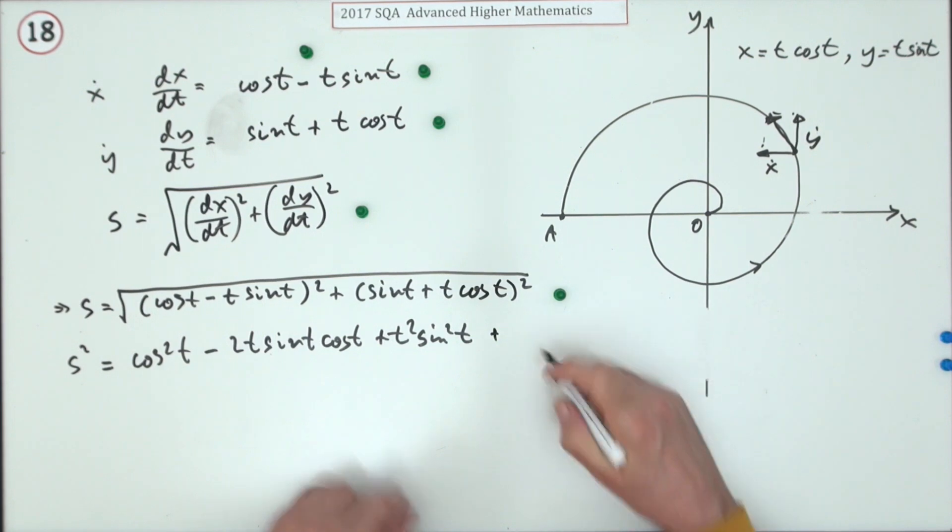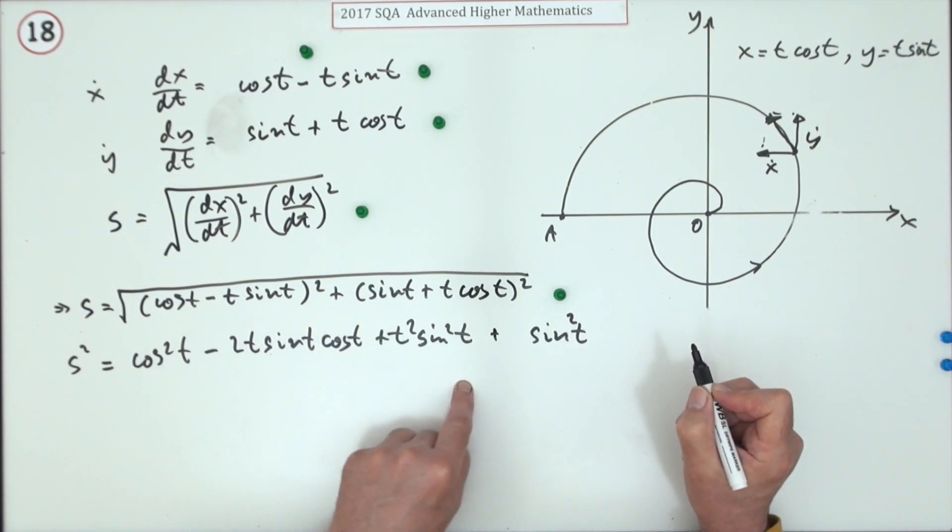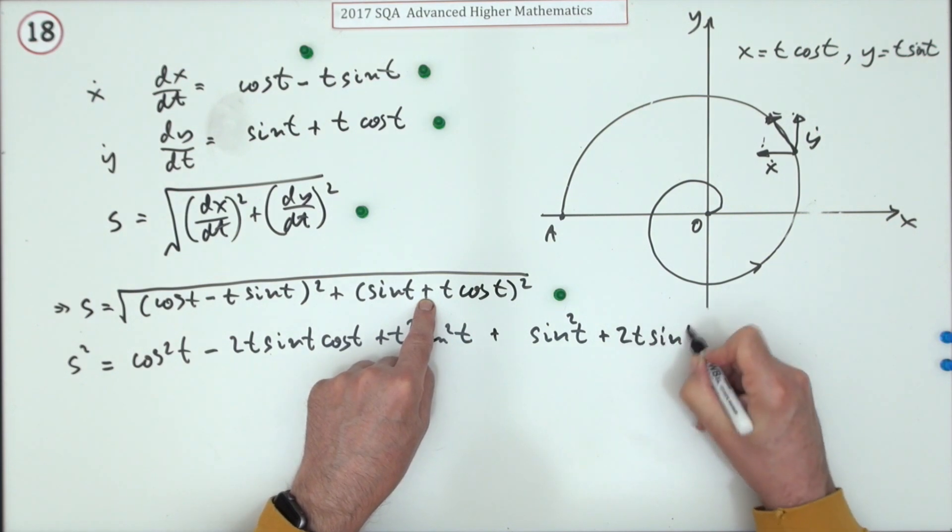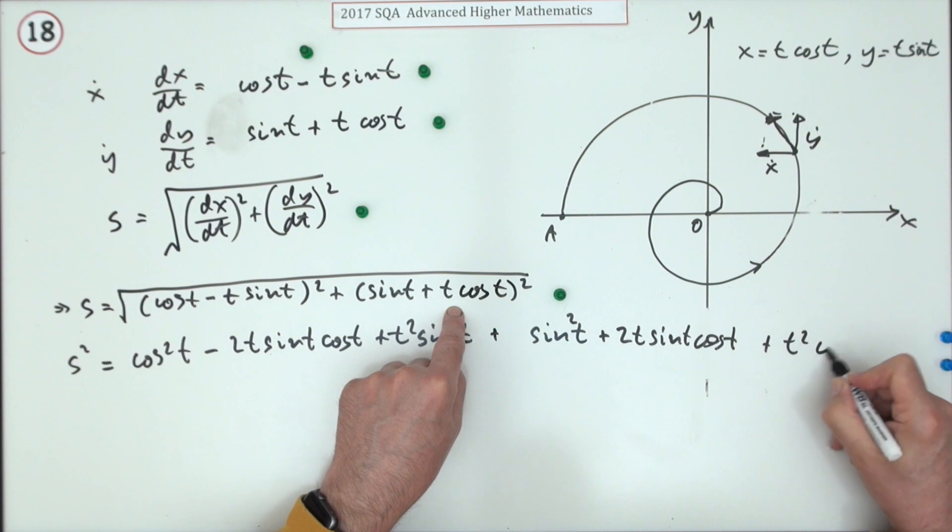This one, square the first—actually might be better to put it underneath here because these pairs are going to match up here—plus sin squared t, plus twice the product, 2t sin t cos t, plus square the last, t squared cos squared t.